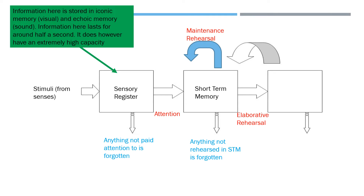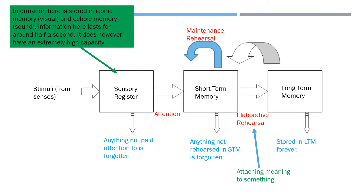Then you've got an arrow going across — that's elaborative rehearsal. What elaborative rehearsal means is you've attached some kind of meaning to it: it means something to you, you've practised it a lot, and you're doing it for a reason — not just pointlessly. That allows it to go over to long-term memory. That is how things inputted into your senses make it into your long-term memory. It's stored in memory forever, we presume.